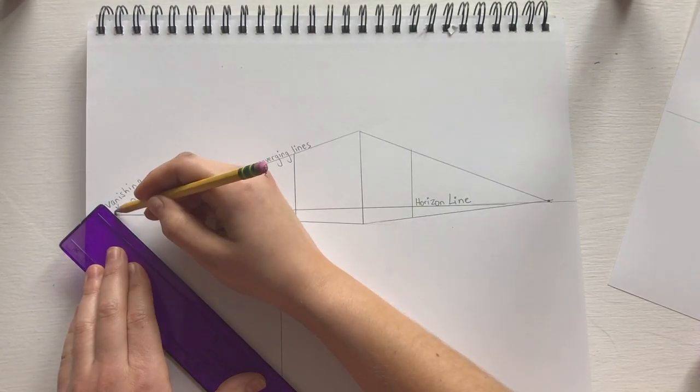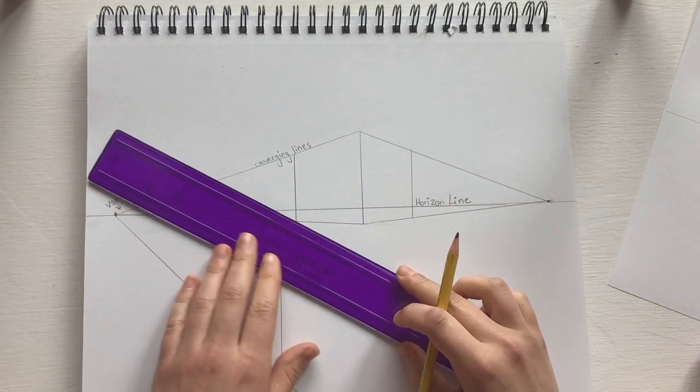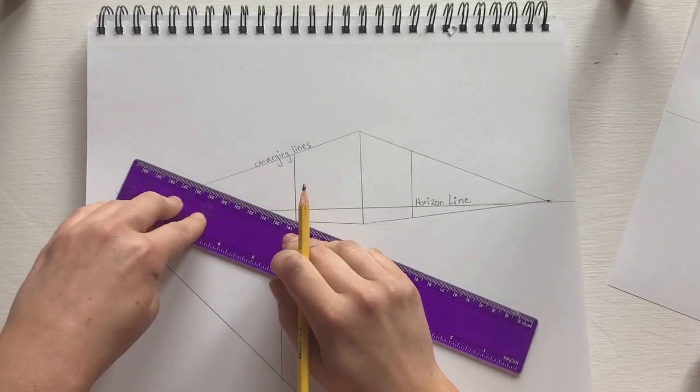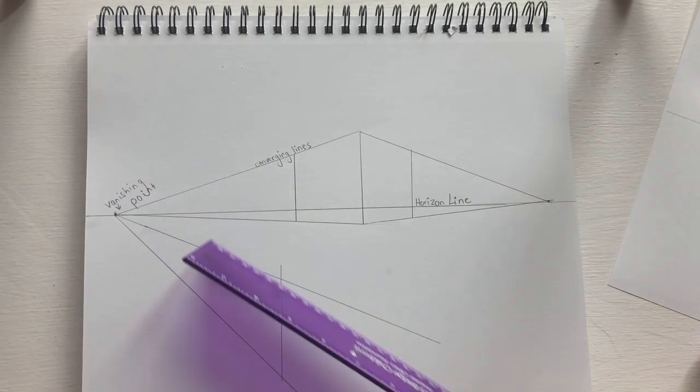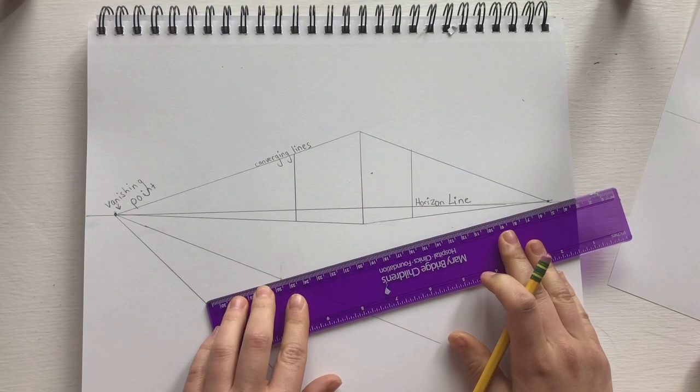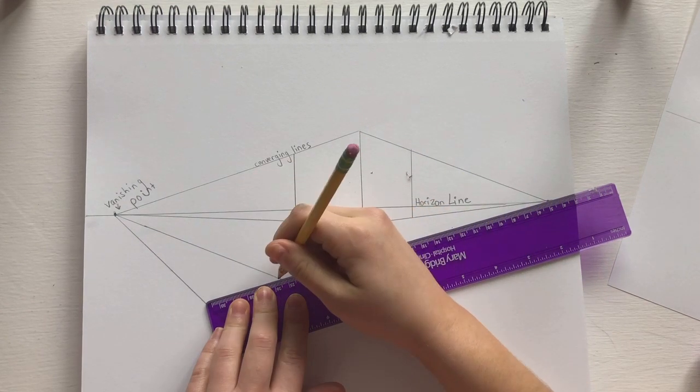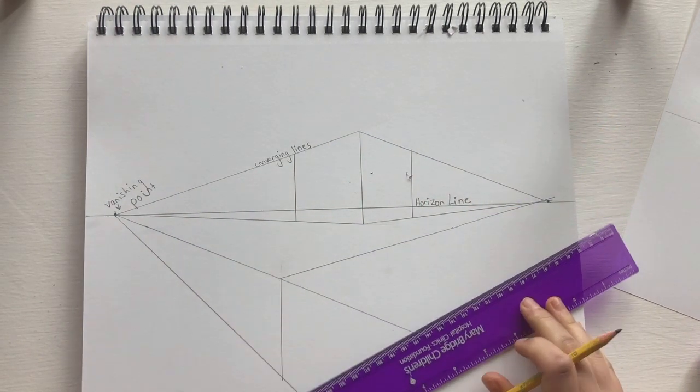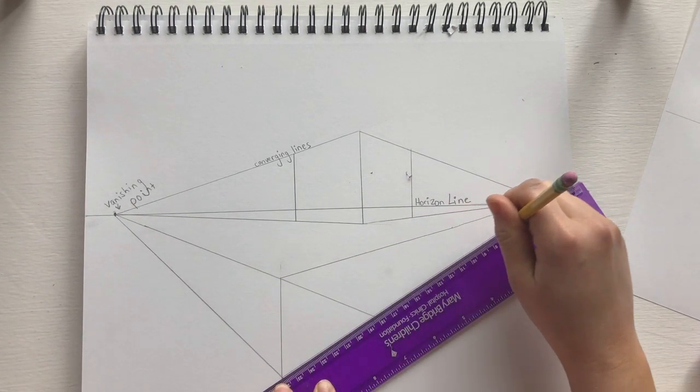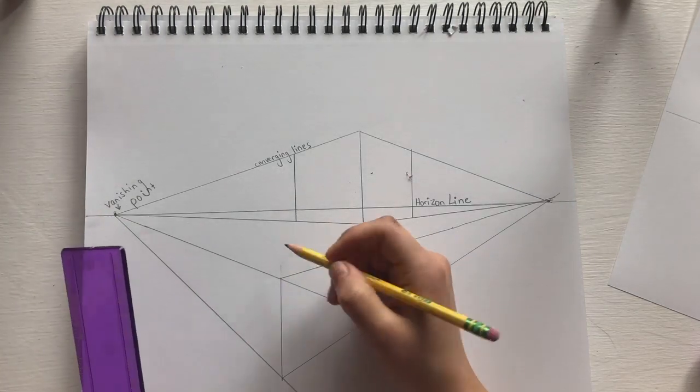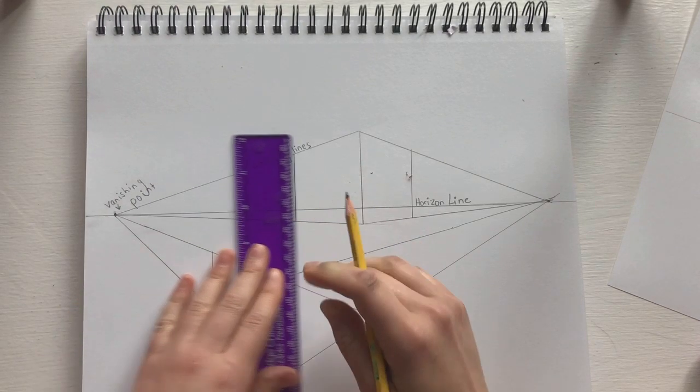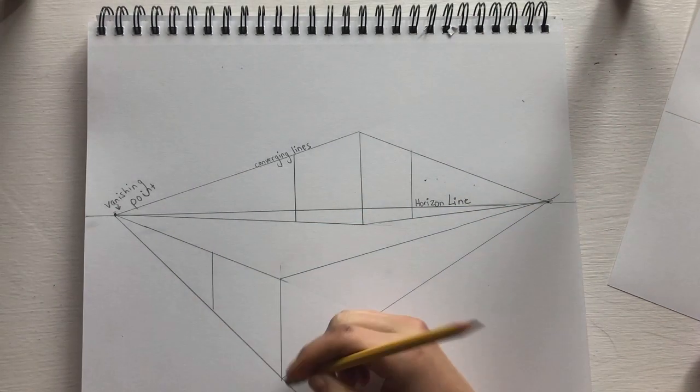Once again, draw a vertical line and then draw to the corners of both vanishing points. Once again, we're going to draw vertical lines to show where the box or our cube ends. Get rid of any unnecessary lines that we don't want.